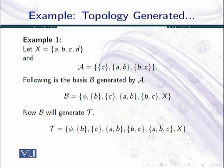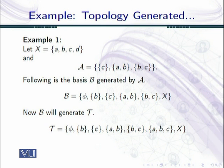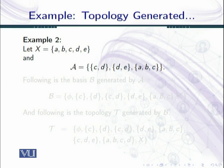Now let us generate the topology. Taking the union of the empty class gives φ. The basis elements {b}, {a,b}, and {b,c} automatically come into the topology. Now {a,b,c} can be generated by taking the union of {a,b} and {b,c}, and X is also automatically an element of τ. One can see that this last collection is basically the topology on X.